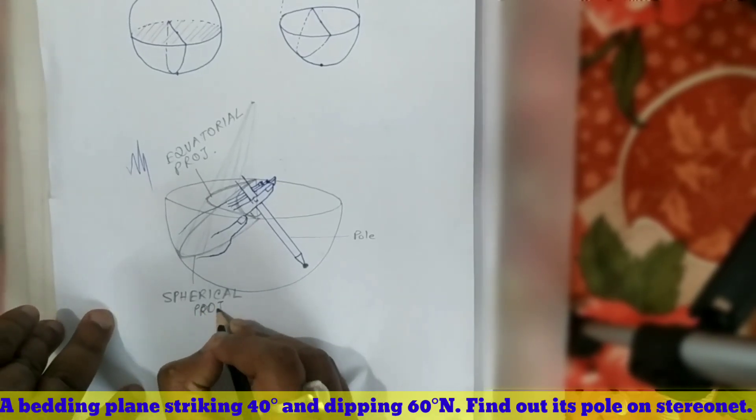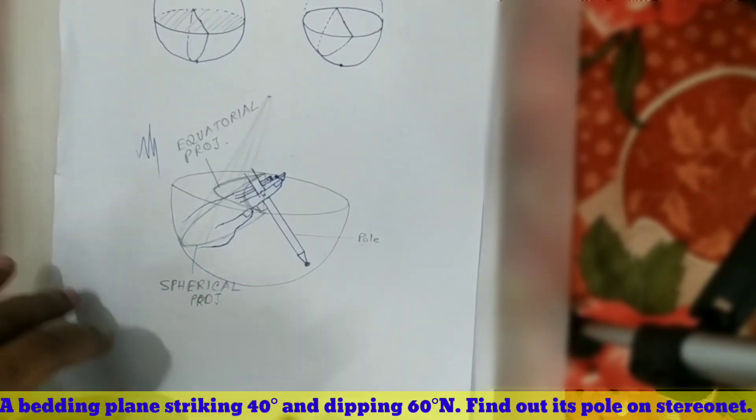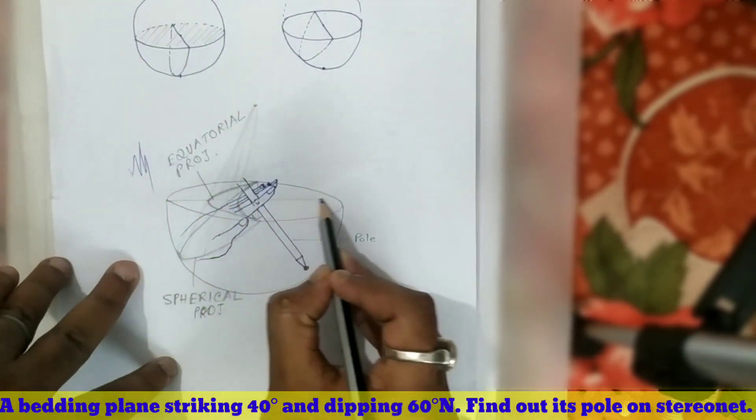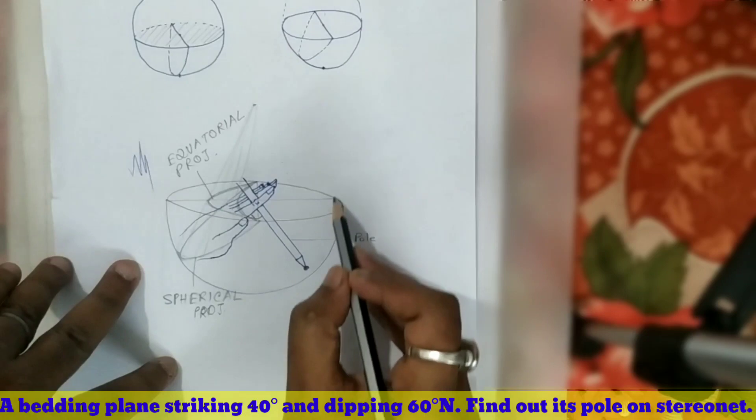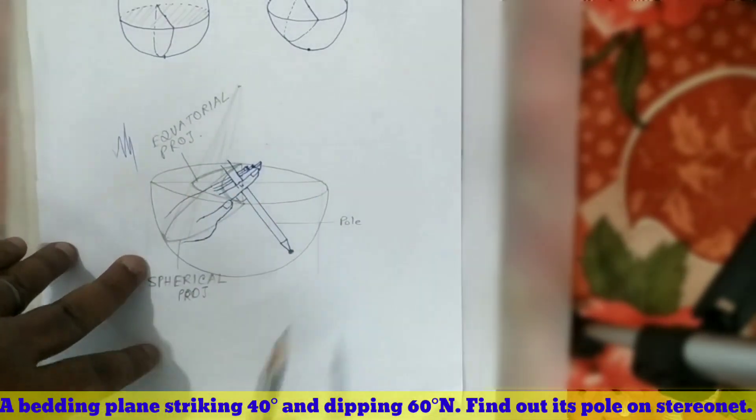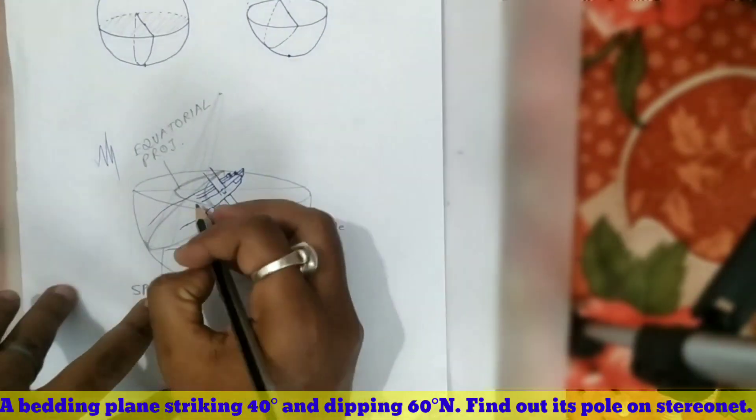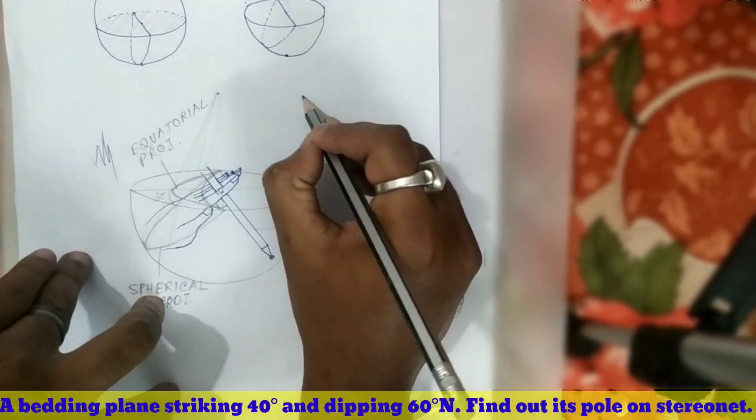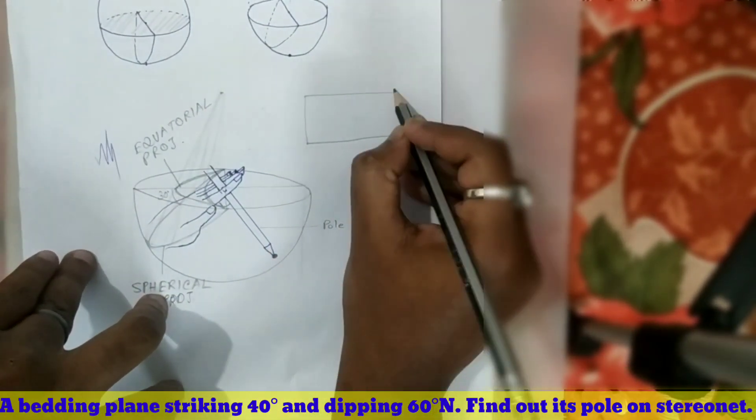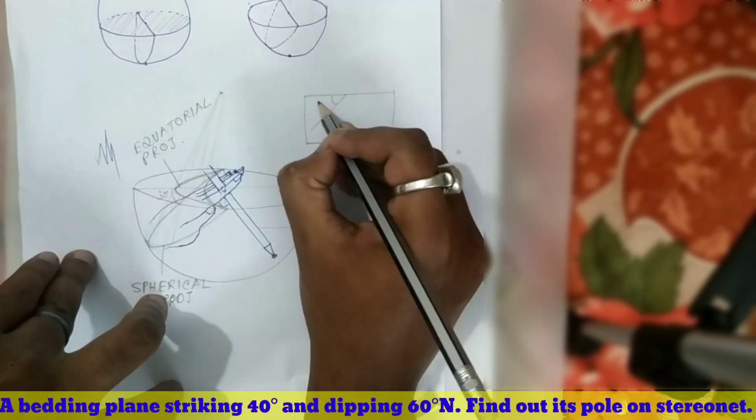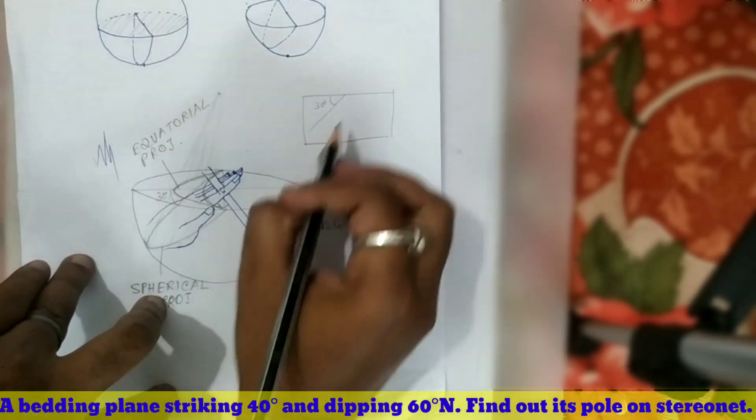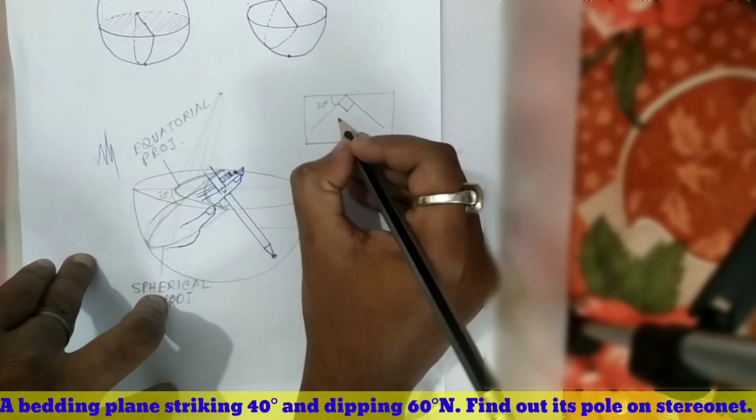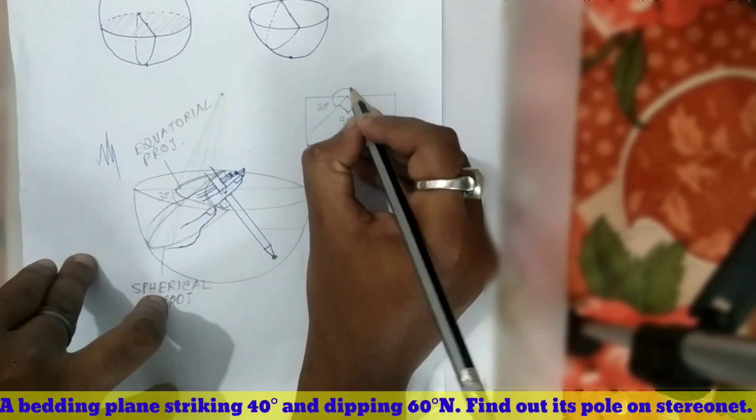This is called the equatorial projection, and this is called spherical projection. This is the basic - we need to find this pole. If we draw a vertical imaginary plane through this sphere, suppose this plane is dipping with a 30° angle. This pole is perpendicular - that is the definition of pole. This is 90°, so the whole angle is 180°.